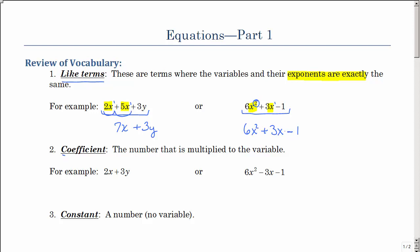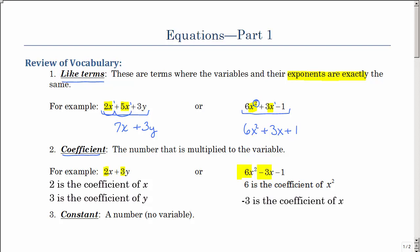The next thing we need to talk about is the coefficient. That is a number that is multiplied to the variable. So in this one, 2 is the coefficient of x, 3 is the coefficient of y. 6 is the coefficient of x squared, negative 3 is the coefficient of x, and then since 1 is what we would call a constant, it is not a coefficient. So one more time, that coefficient is that number that is multiplied to the variable, in other words, a letter.